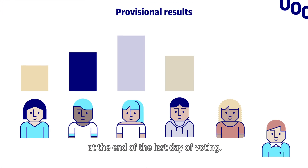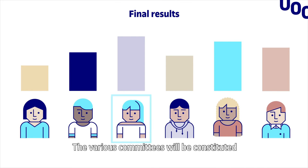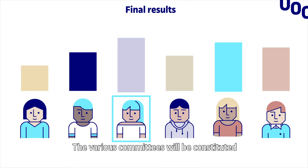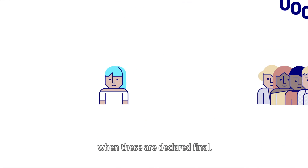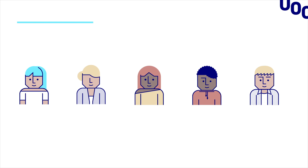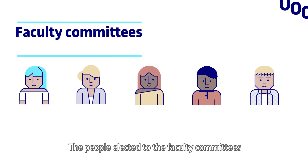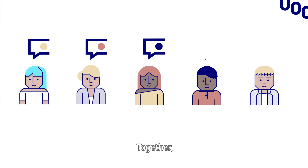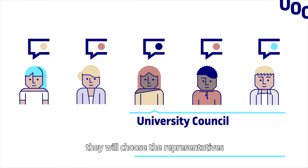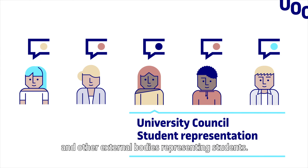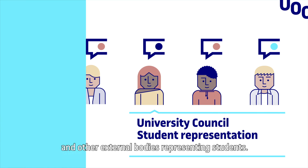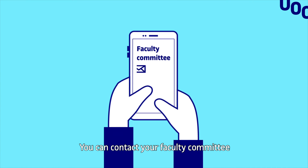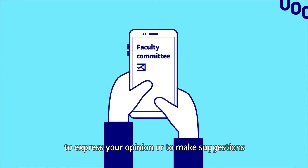Results: the provisional results will be published at the end of the last day of voting. The various committees will be constituted when these are declared final. The people elected to the faculty committees will also be members of the student council, and together they will choose the representatives of the university council and other external bodies representing students.